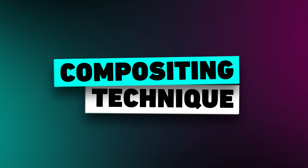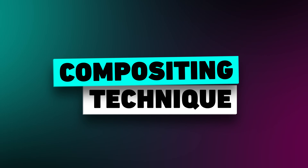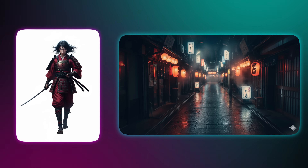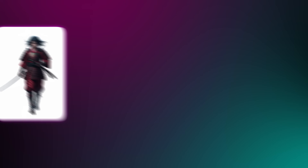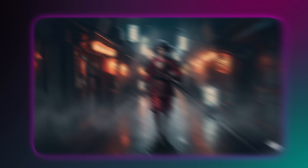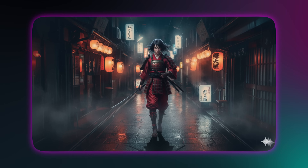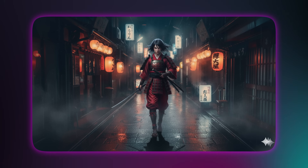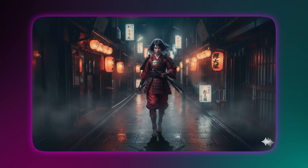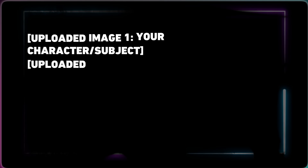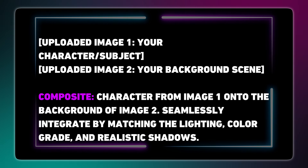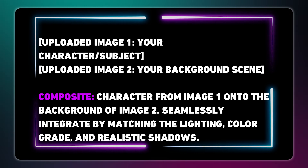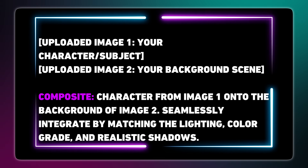Last core technique: compositing. This is how you place one image into another. The pro hack is multi-image fusion, and it uses a direct prompt with the power word 'composite' to perfectly merge your images. Here's the structure: you upload your character and your background, then use this powerful two-part prompt.